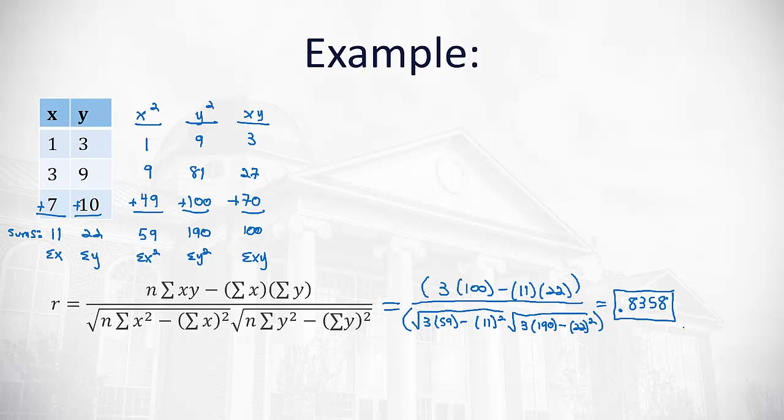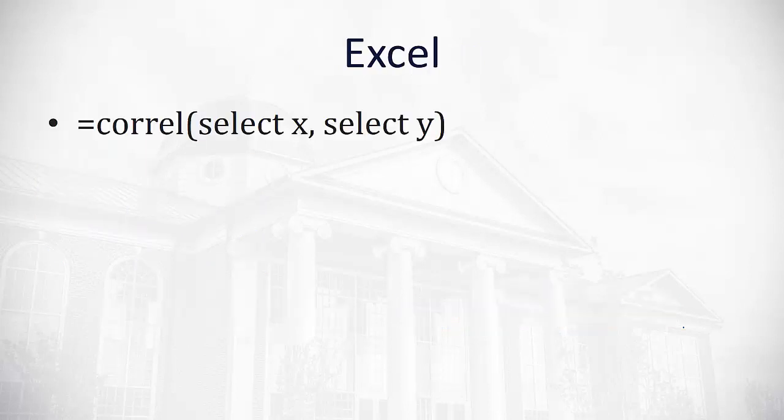Now going through these steps, especially the calculator bit, typing it all in correctly can be a bit tedious. So I'm going to show you a little shortcut in Excel to help you calculate this value. Excel has a nice command called CORREL. Then you select your x's, comma, and select your y's. Let's take a look at how we can do this.